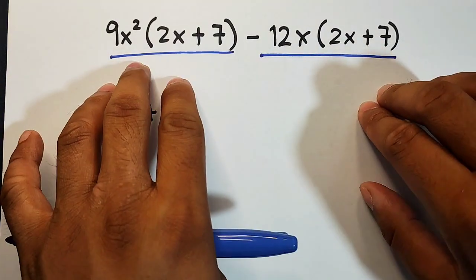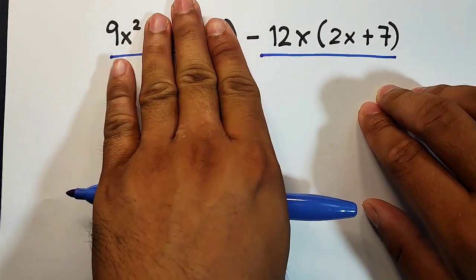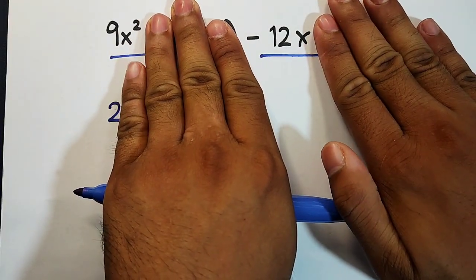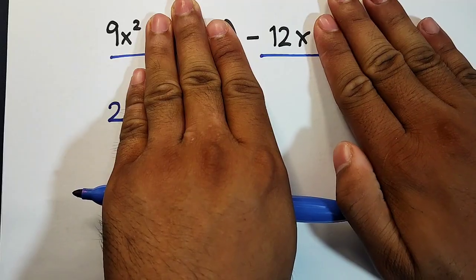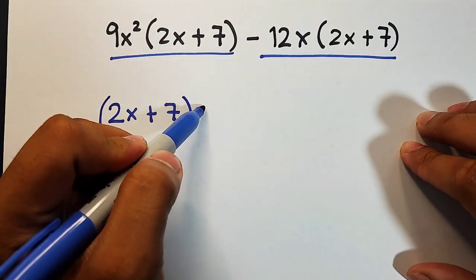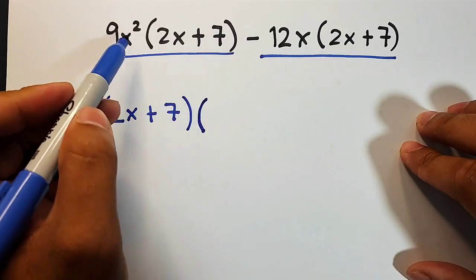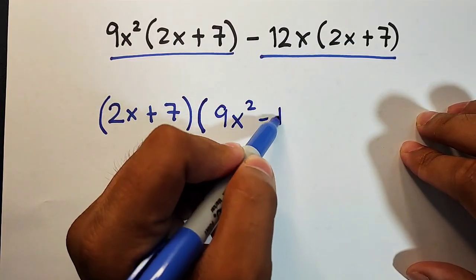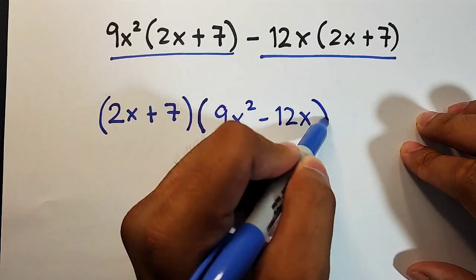When we remove 2x + 7, if I remove this, remove this, remove this, what remains is 9x² - 12x. That's our other factor. Enclosed in parentheses, 9x² - 12x.